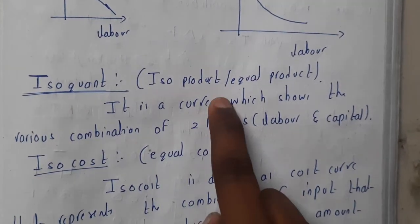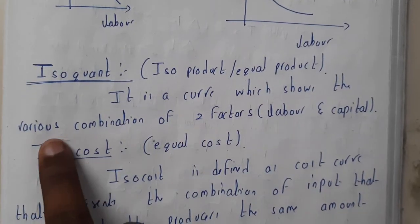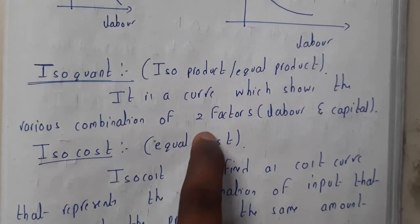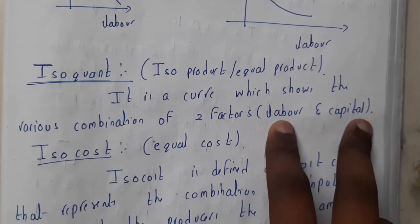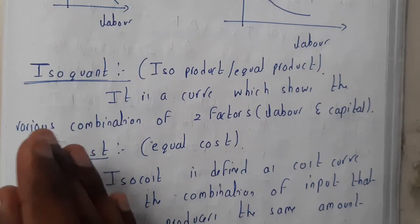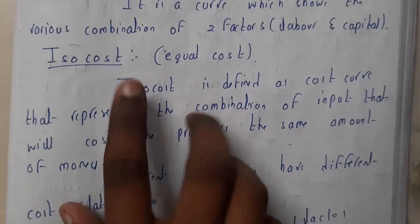Isoquant is nothing but isoproduct, so that is nothing but equal products. It is a curve which shows the various combinations of two factors, labor and capital. Even though you vary the labor or capital, you're gonna get the same value of production. So that is nothing but isoquant. Similarly, isocost means equal cost.